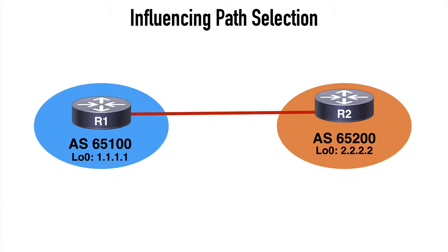We now want to take a look at some ways that we can influence BGP path selection. There are some special cases where we may need to override certain BGP default behaviors. In this first topology we're using a couple of routers, R1 in Autonomous System 65100 and R2 in Autonomous System 65200. They're connected over a 10.1.1.0/24 network and they're advertising their respective loopback addresses: 1.1.1.1 for router 1 and 2.2.2.2 for router 2.